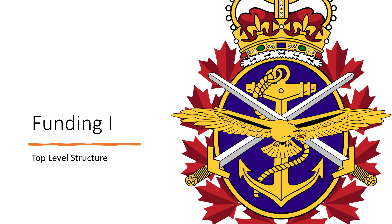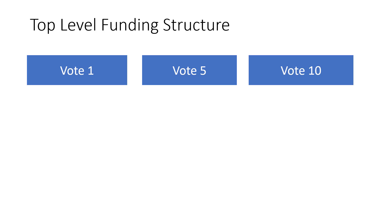Welcome back. This is the first of two videos where we'll be discussing the funding structure used to spend budget money in government. This first video will look at the top-level structure of how money is given to departments to conduct the business. At National Defense, we have three votes: Vote 1, Vote 5, and Vote 10. These votes are essentially buckets that have money which must be spent for a specific purpose, and we'll look at each one in turn.